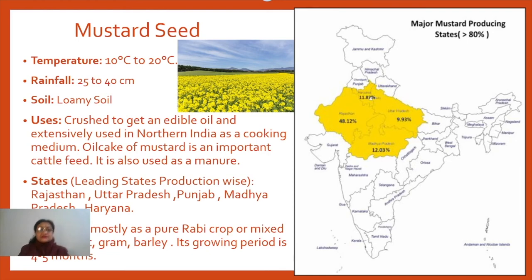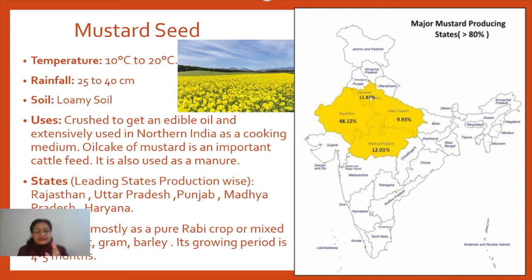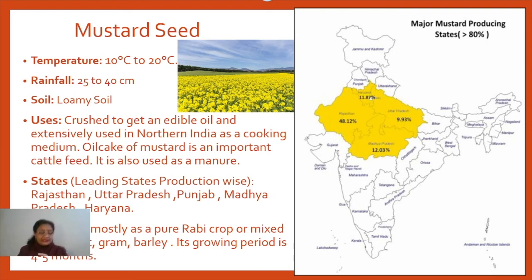The reason mustard is grown along with other main crops is that it gets ripened earlier than the main crop, so it is harvested before that. This way, from the same field we get two crops at a time. In most areas where mustard is grown, it is grown along with some other main crop.